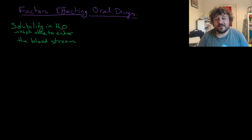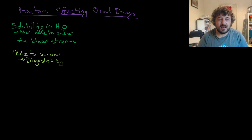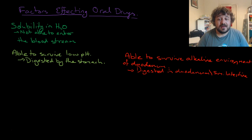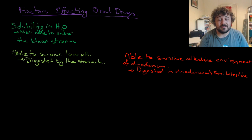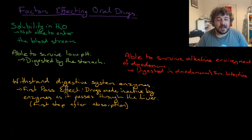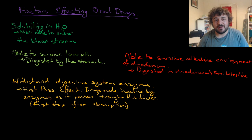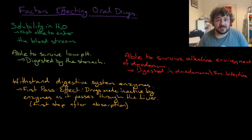For example: it needs to be soluble in water — if it's not, it might not be able to enter the bloodstream. It needs to be able to survive a low pH — if the active drug is digested by the stomach, it won't make it into the bloodstream. It needs to survive an alkaline environment in the duodenum — if it's broken down in the small intestine before absorption, it won't enter the bloodstream. It needs to withstand digestive enzymes. There's also the first-pass effect: drugs made inactive by enzymes as they pass through the liver. If that happens, the drug won't work, so it might need to go in intravenously or via subdermal implant.